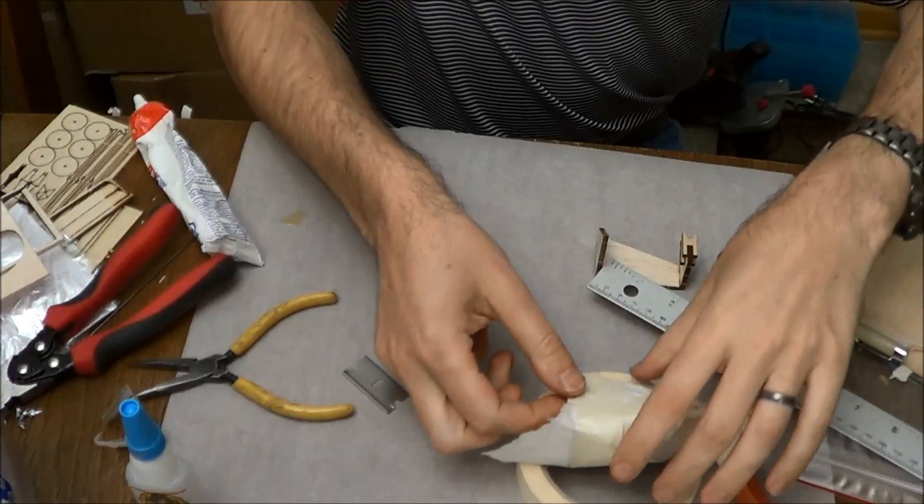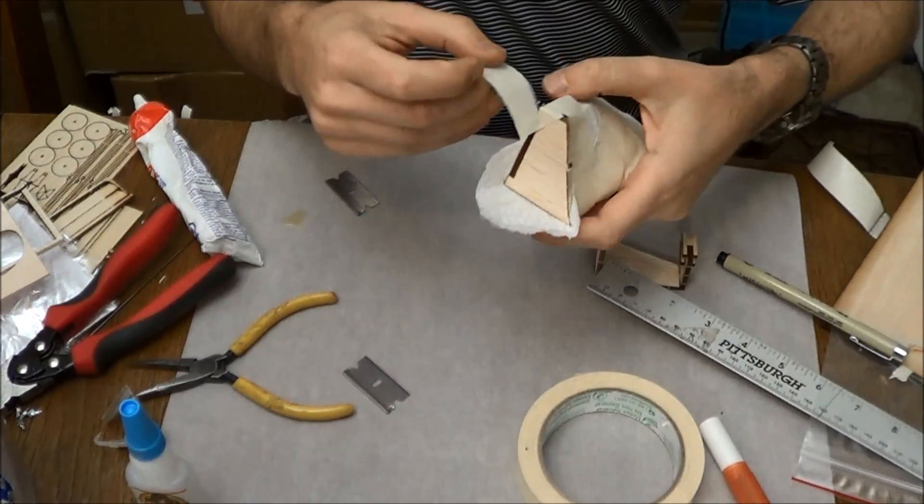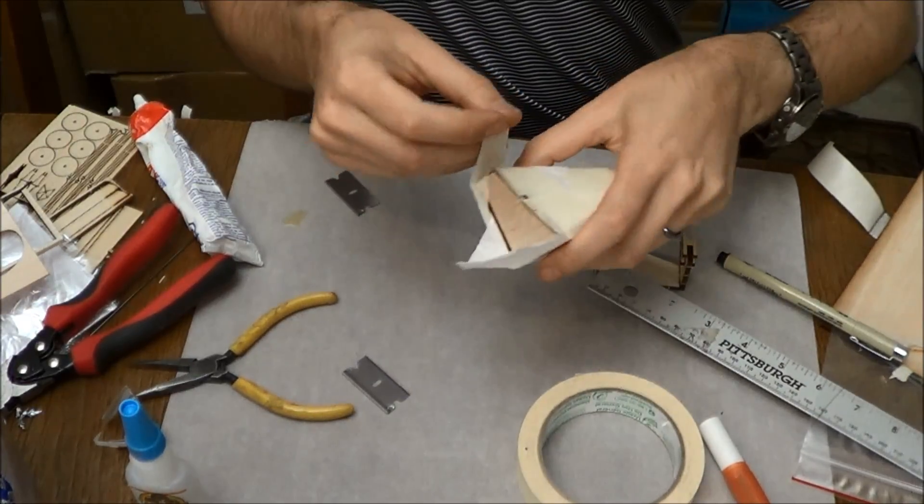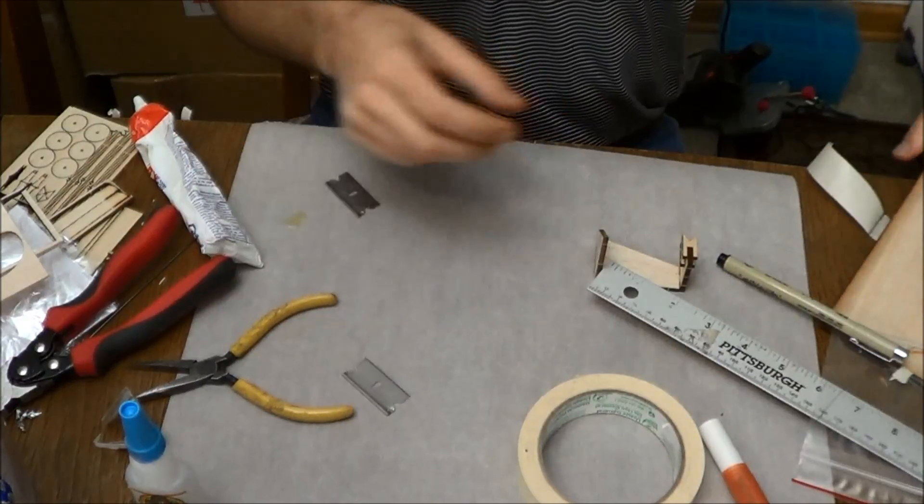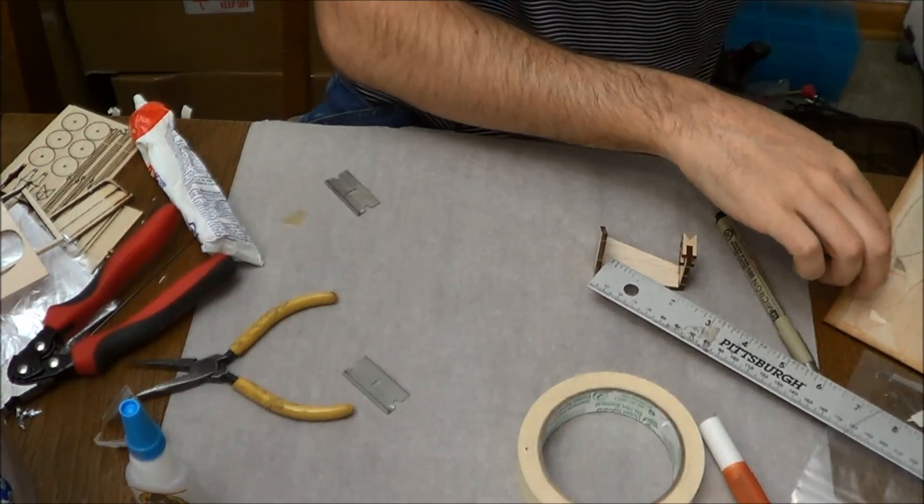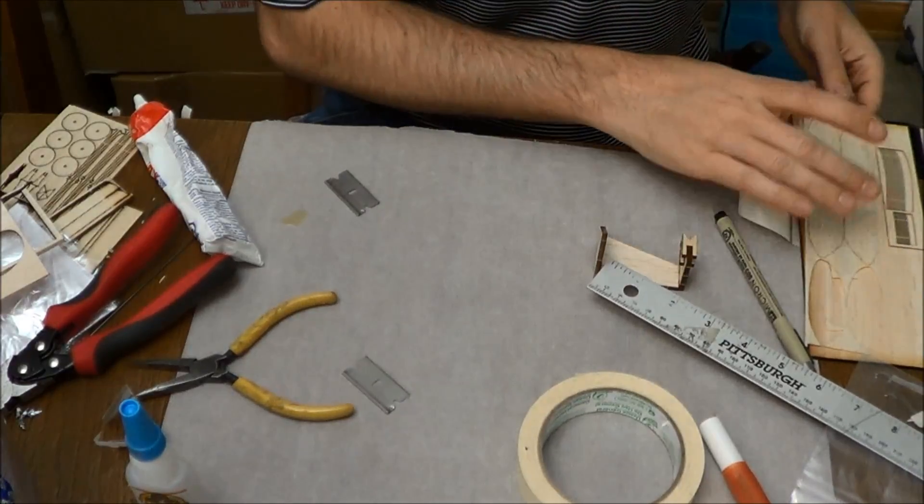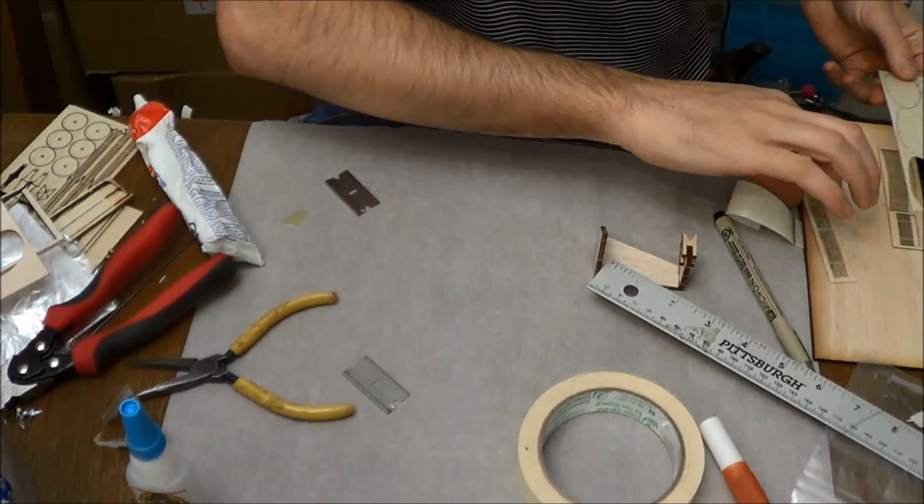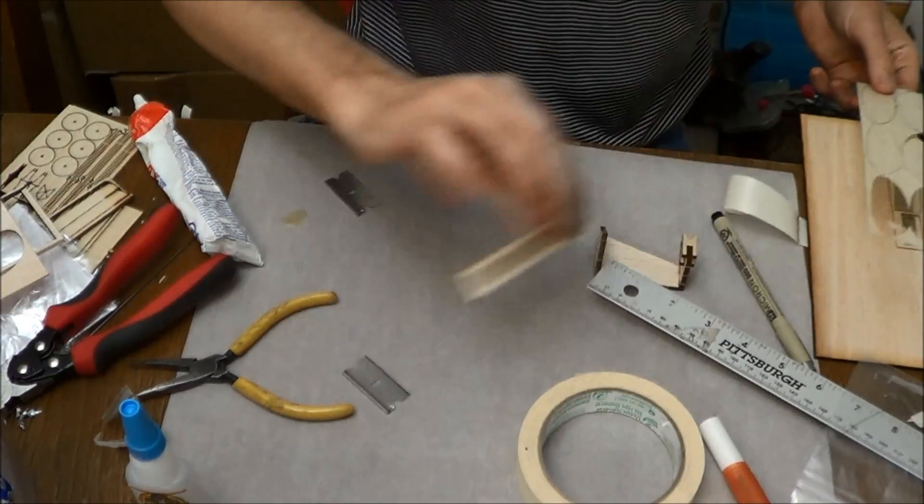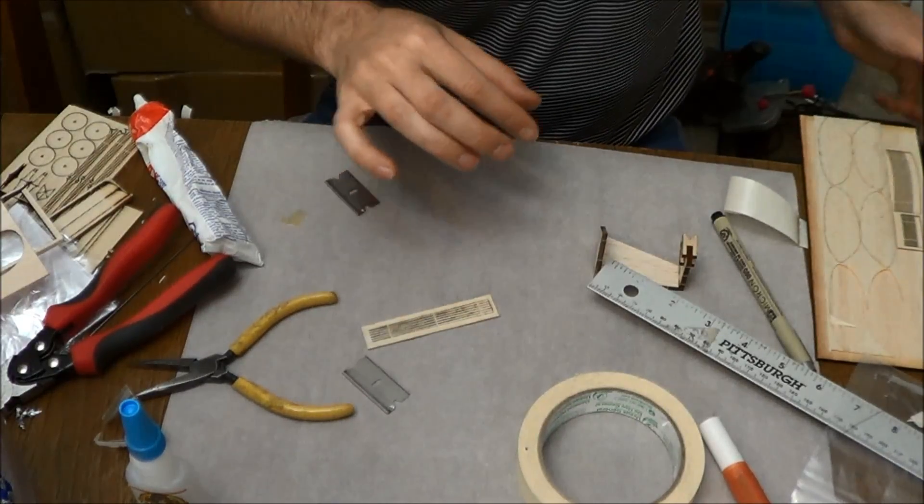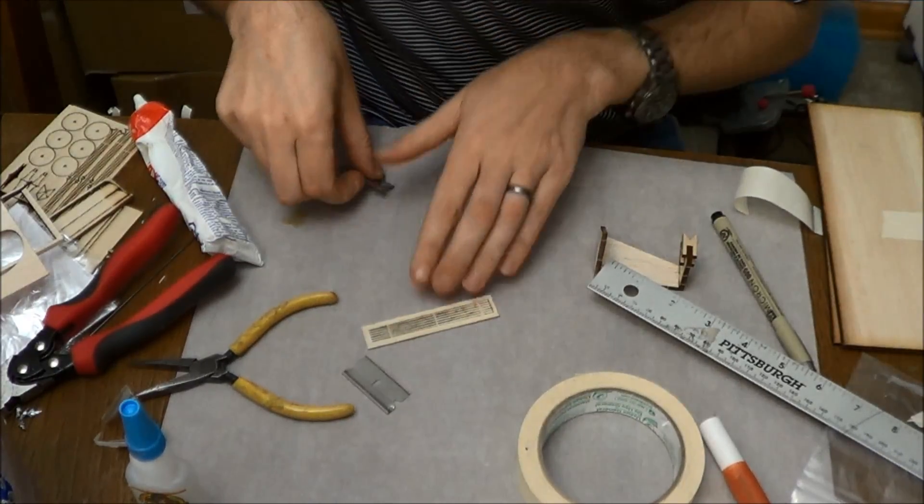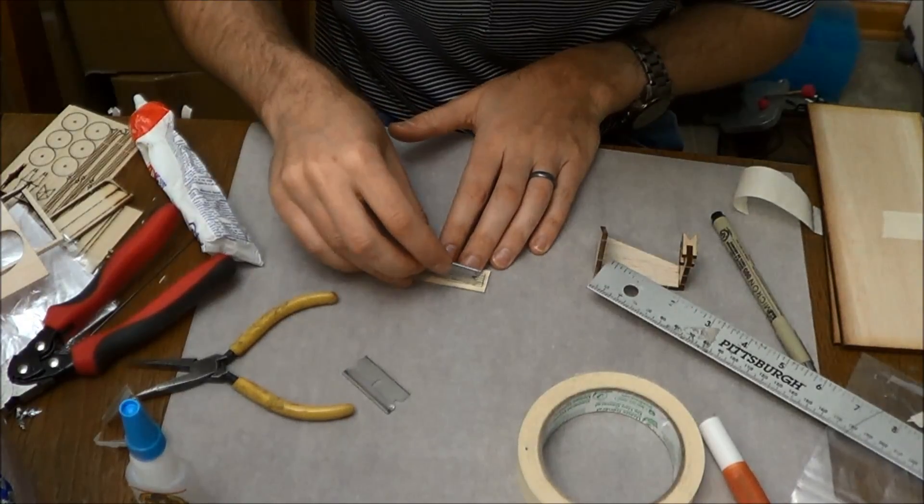Okay, so now we're going to start working on finishing out our propeller. Actually we'll leave that in there for a minute. We're going to assemble the propeller hub. So what we're going to do is pull out those propeller spars that we had, and we're going to cut out two propeller spars.